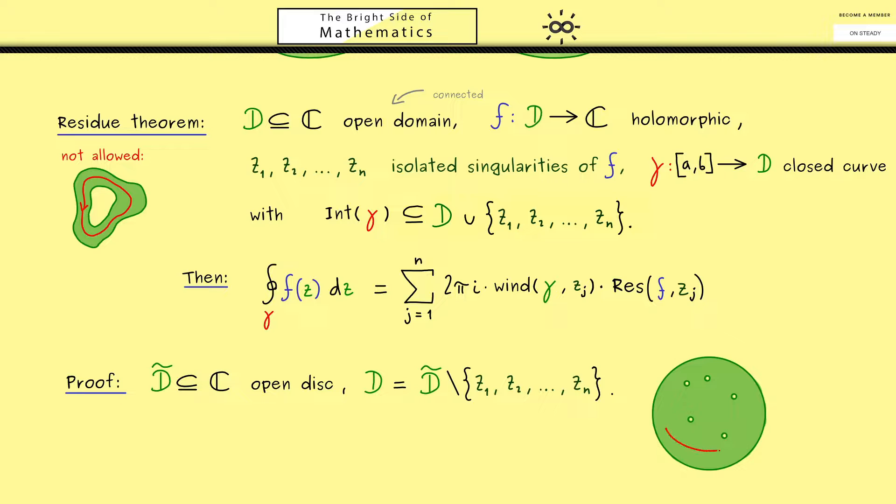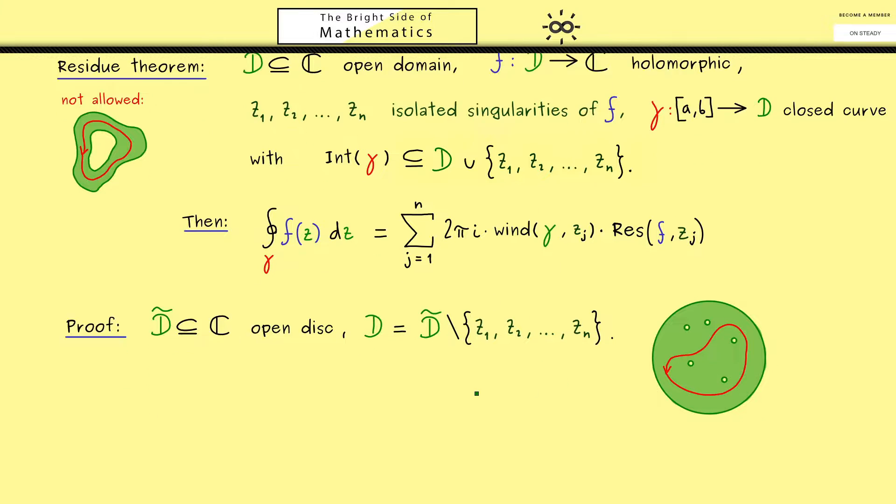And now a simple curve gamma could look like this. Please note there the condition that the interior is completely in D tilde here is always fulfilled.